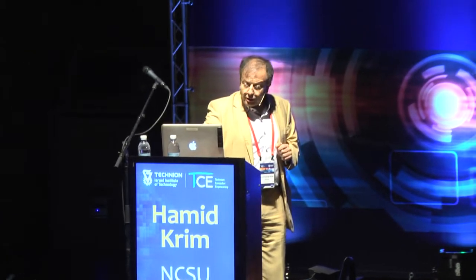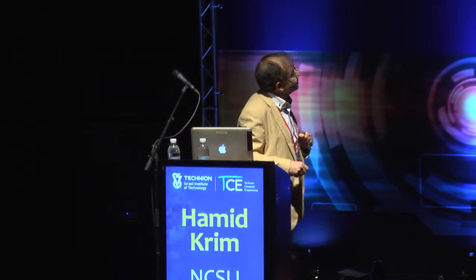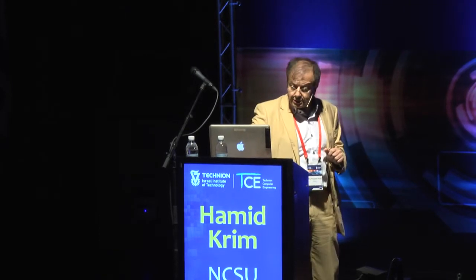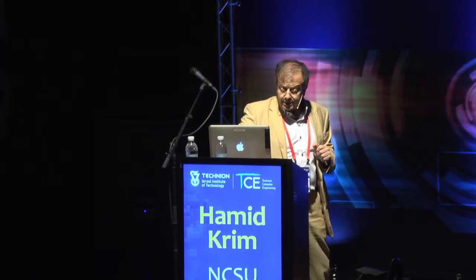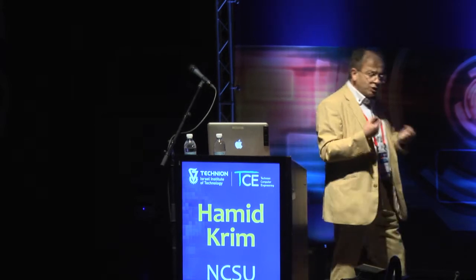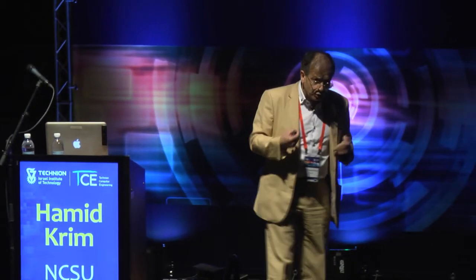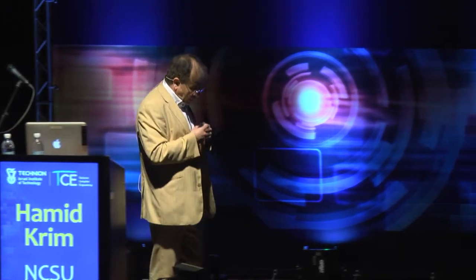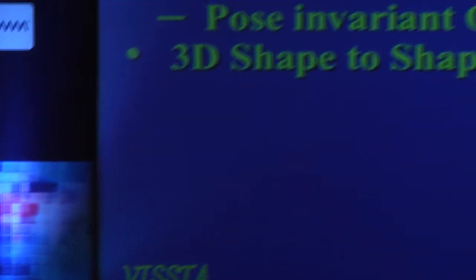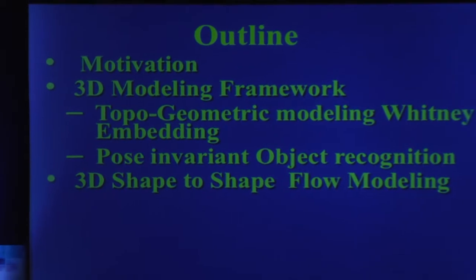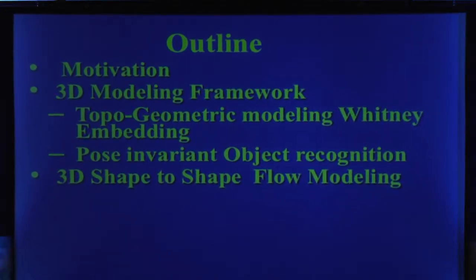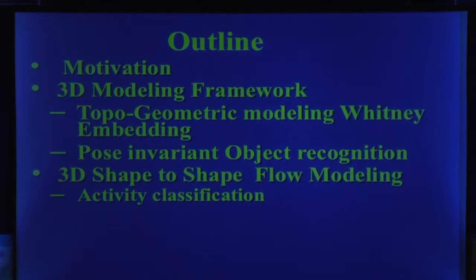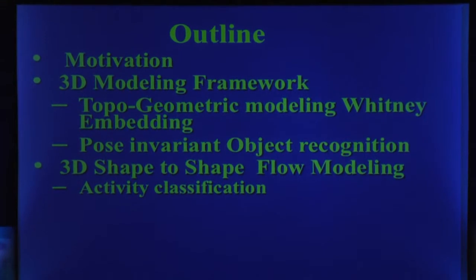The map of my talk will start with a brief motivation, then I'll go into the 3D modeling framework — how we view it, how we do it, how it's implemented — and then I'll briefly describe how we can use what I call the topo-geometric modeling of 3D shapes for object recognition. Then I'll describe a very natural evolution of these 3D shapes to talk about shape flow modeling, which we apply to activity analysis, surveillance, and things of that nature.